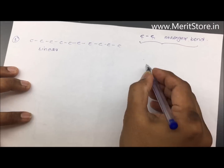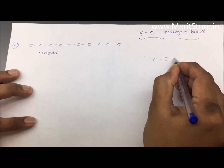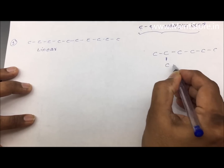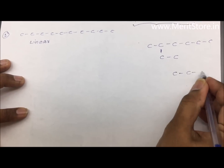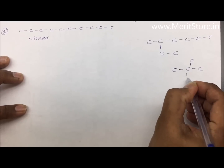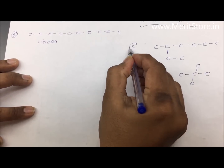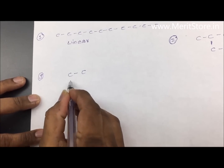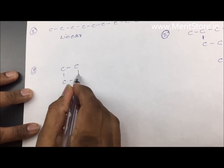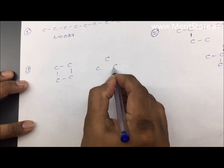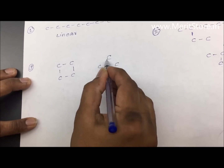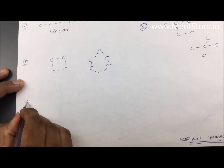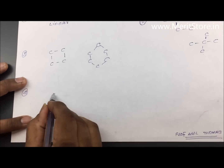Another type of catenation is branching: carbon bonds with carbon, and those bonds can have branches, and those branches can go on further with sub-branches. These are two examples of catenation with branching. A third example is closed structures, where carbon atoms form rings — this is also catenation.